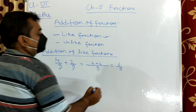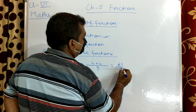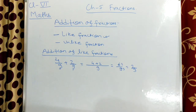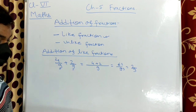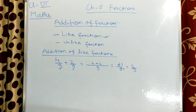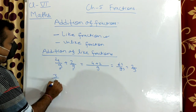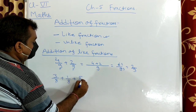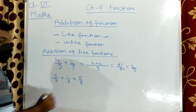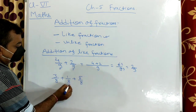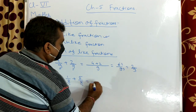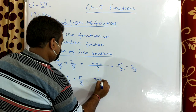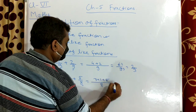Suppose the number of terms is three: 3 by 8 plus 1 by 8 plus 5 by 8. All three fractions have a common denominator 8, so 3 plus 1 plus 5 equals 9, giving us 9 by 8. In this way we can do addition of like fractions.